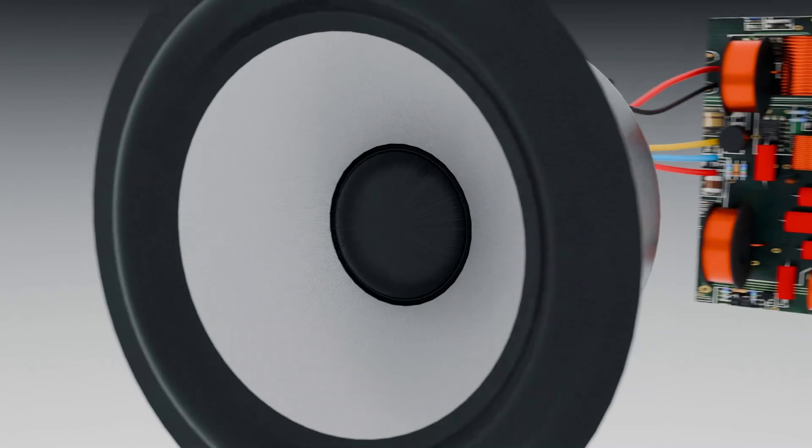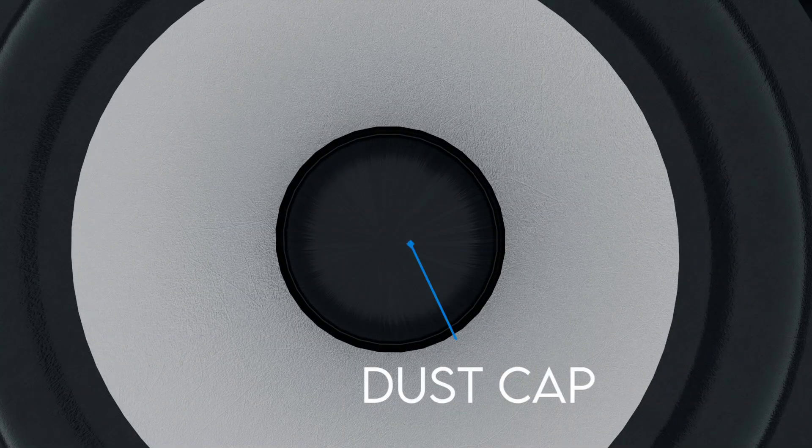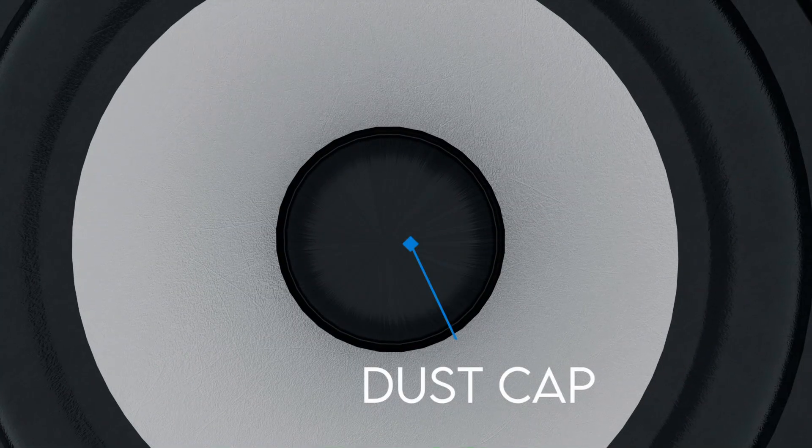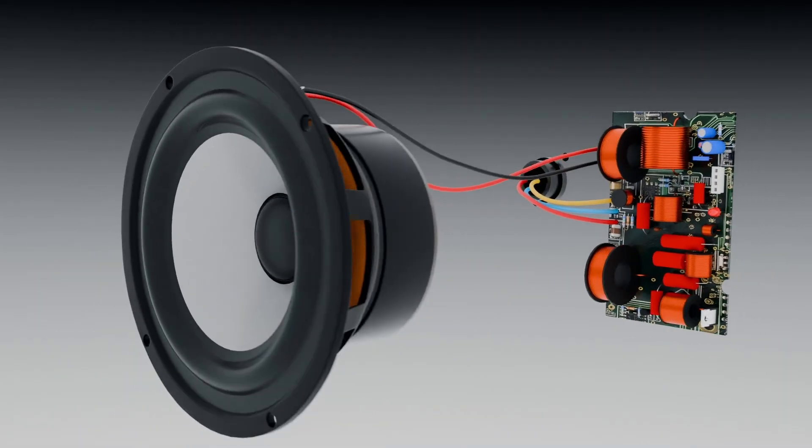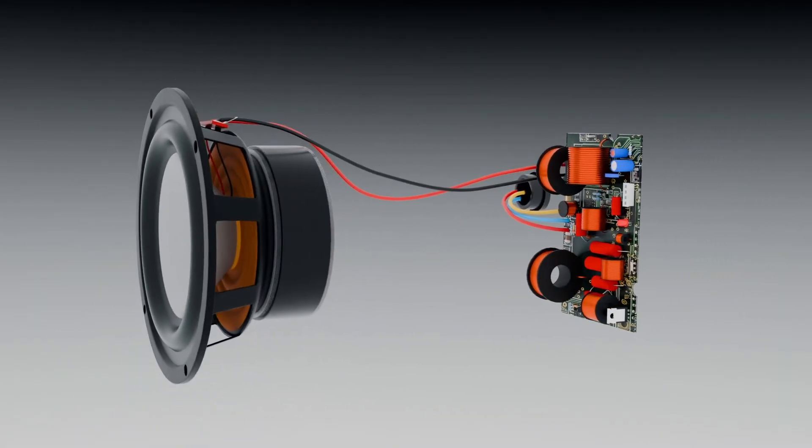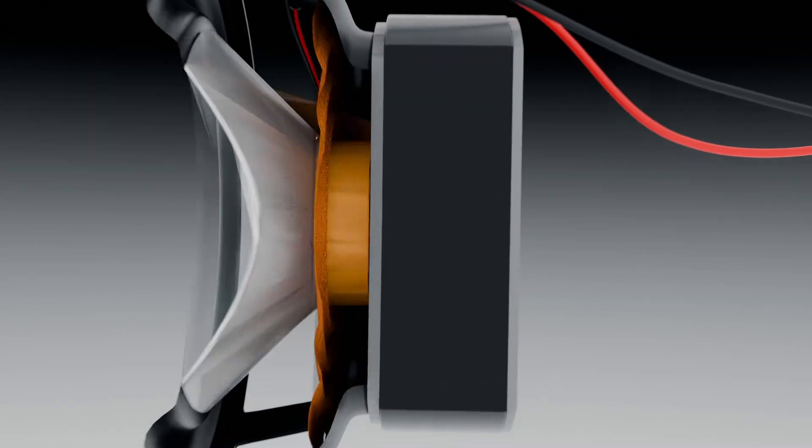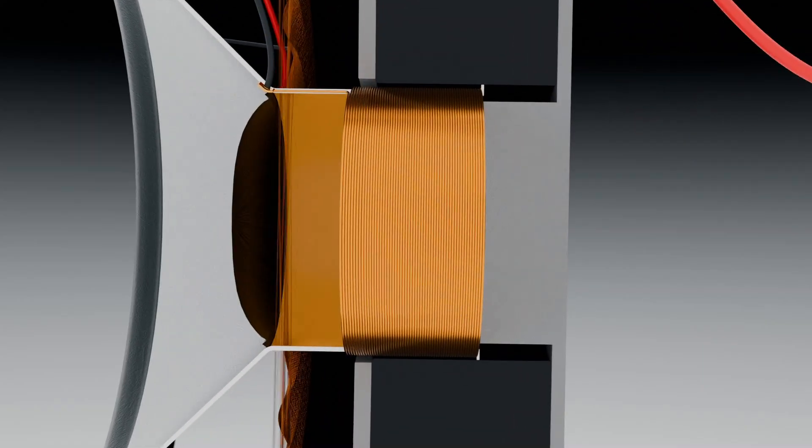A dust cap is used to prevent dust from entering the internal components. Now let's see how all these components work together to produce soothing sounds from electrical pulses. After the sound waveform is converted into electrical pulses, these pulses are sent through the coil.